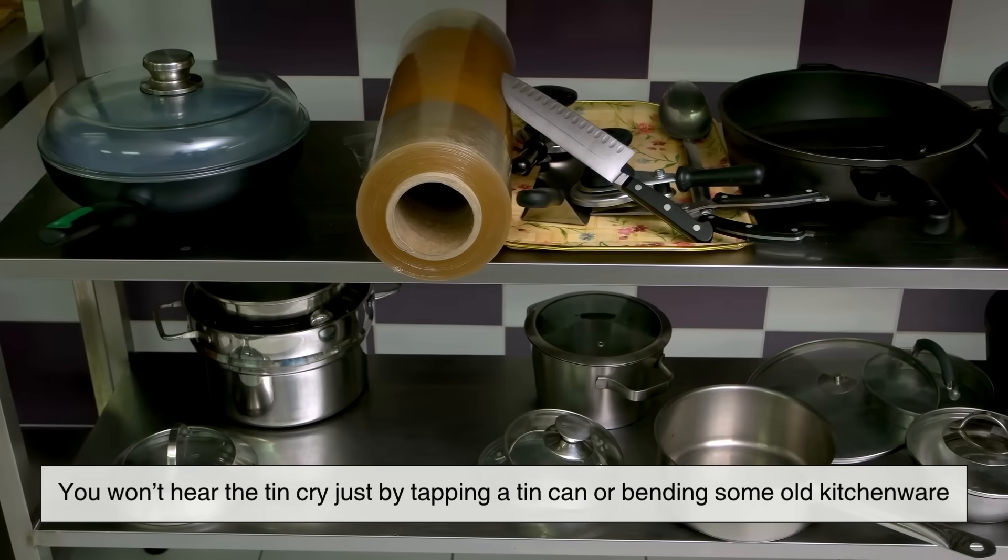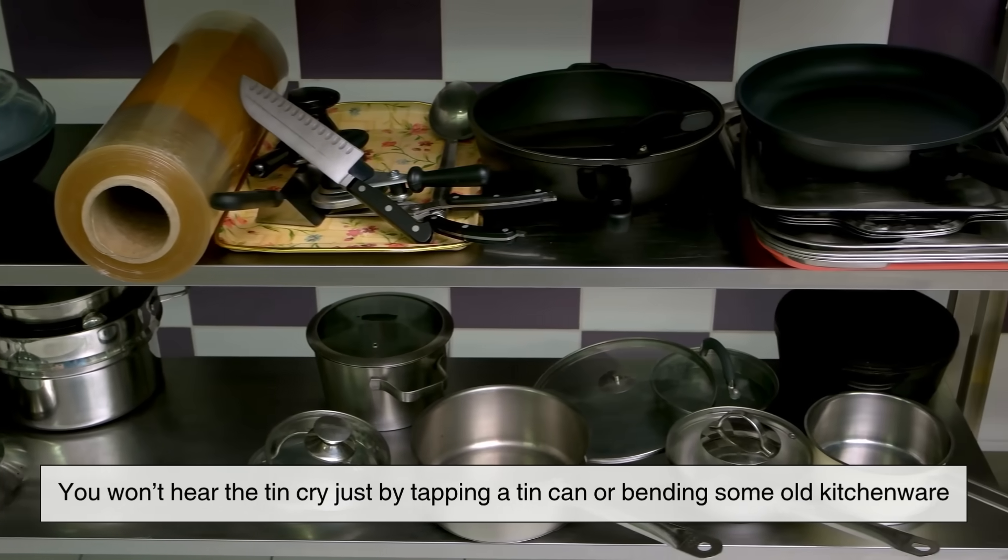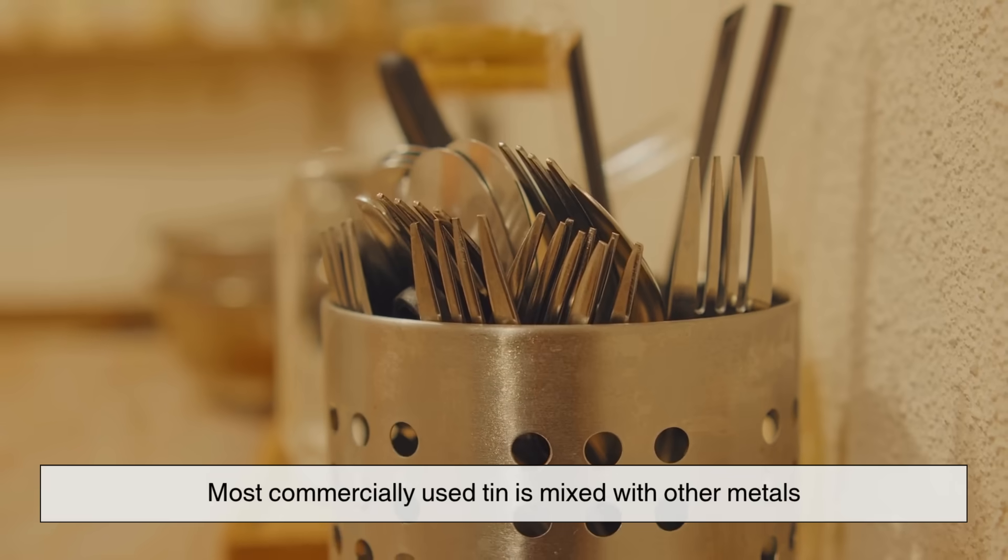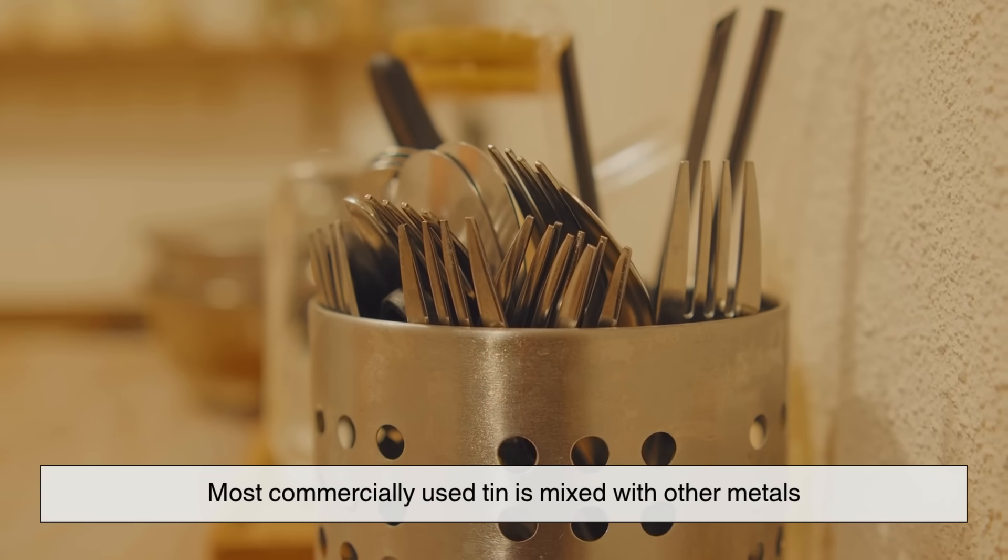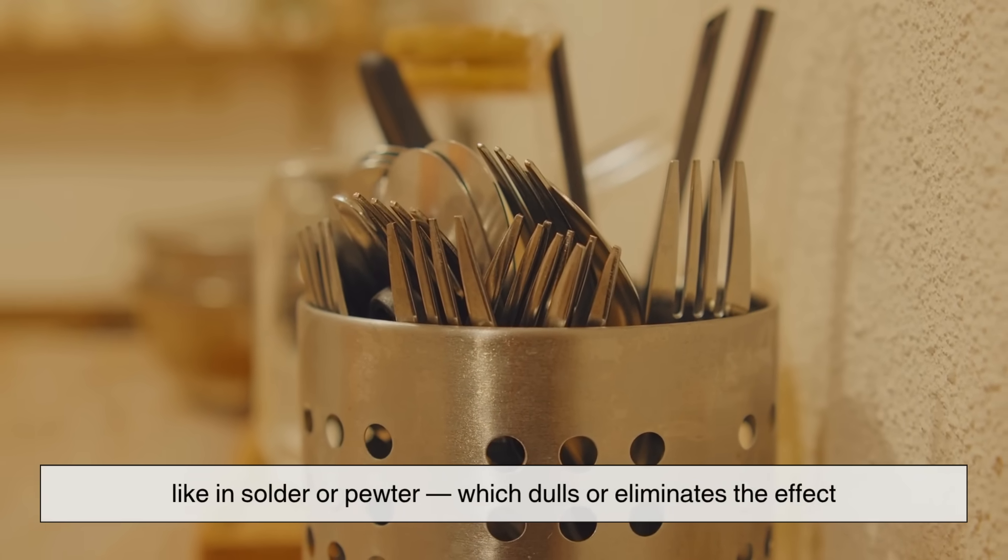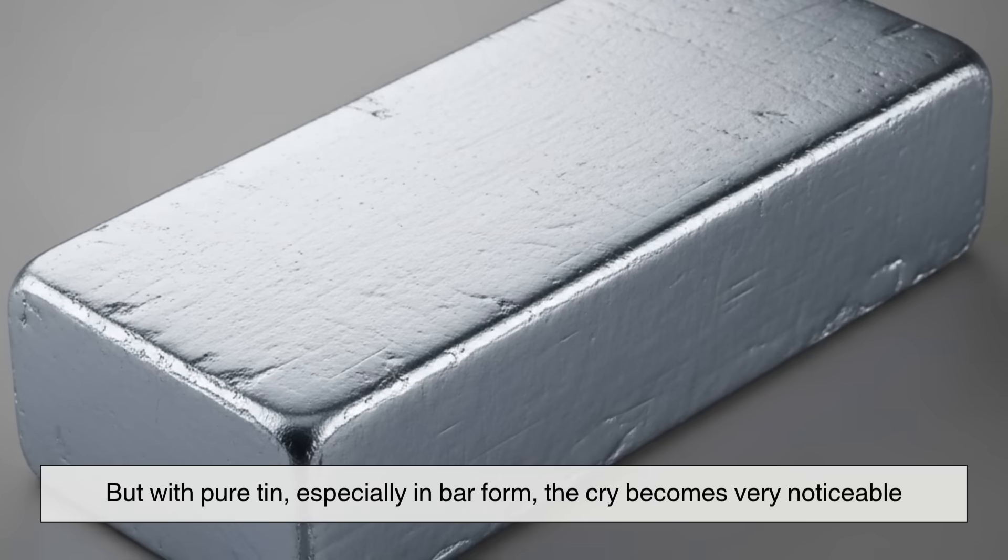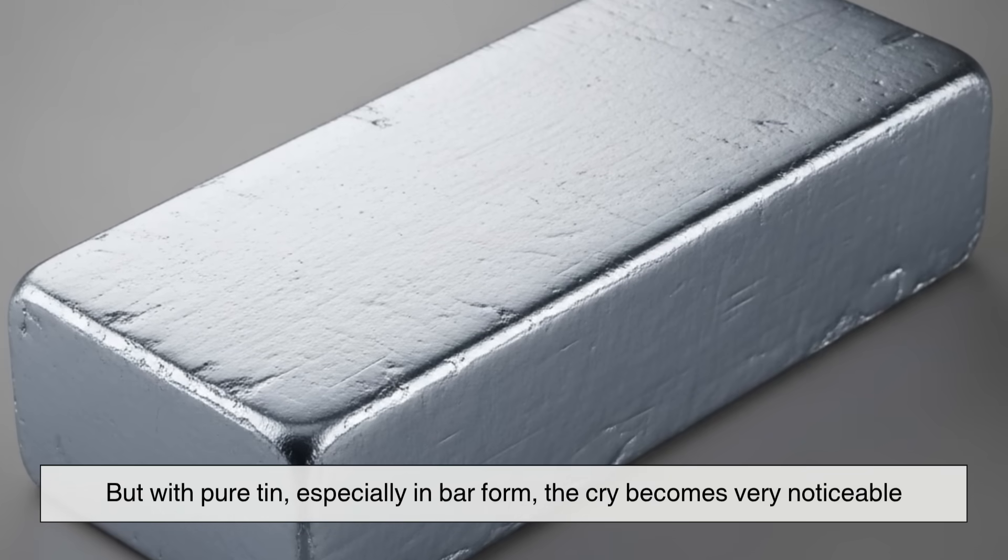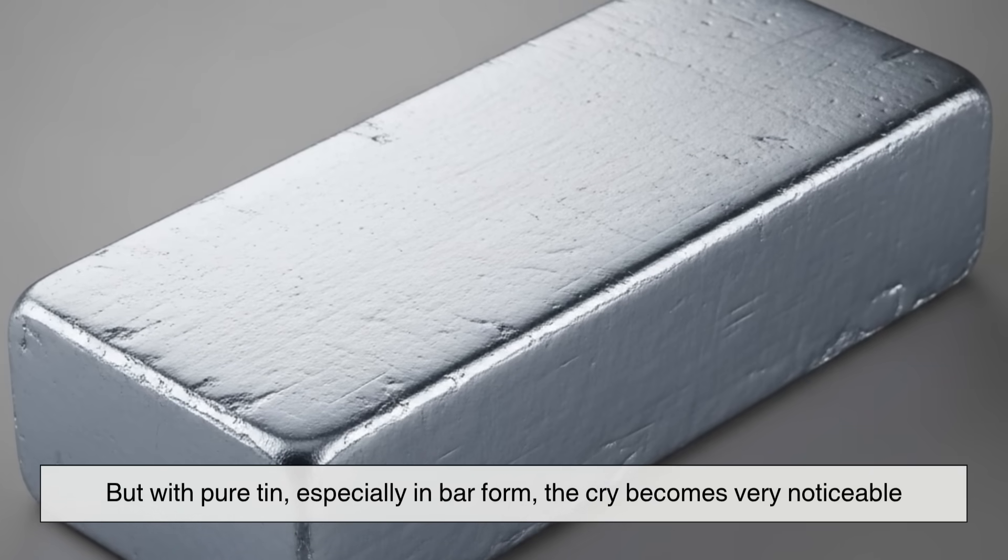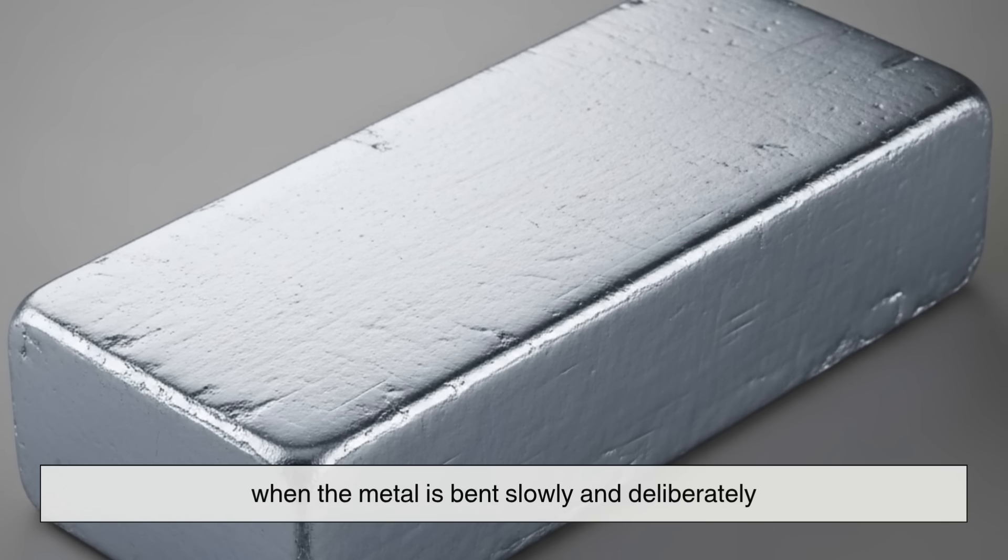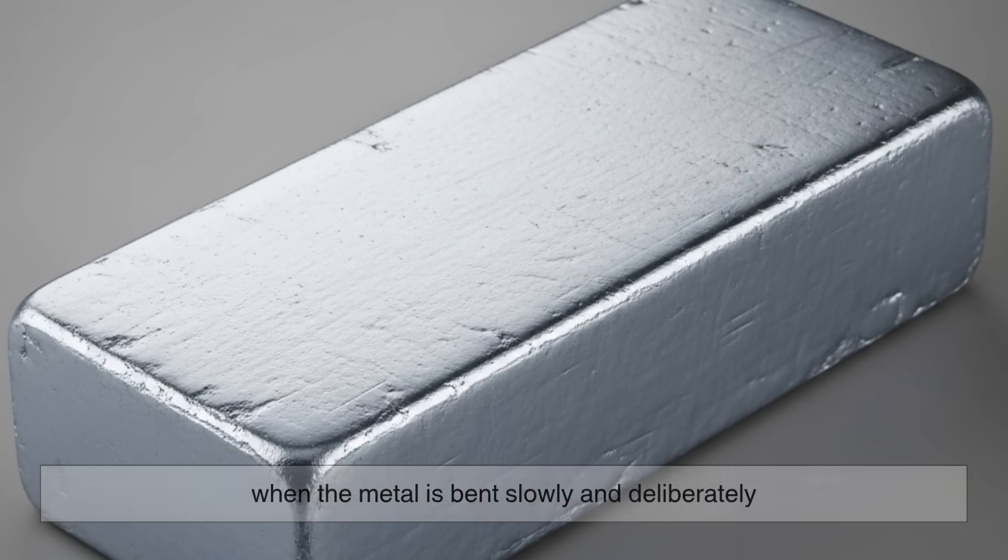You won't hear the tin cry just by tapping a tin can or bending some old kitchenware. Most commercially used tin is mixed with other metals, like in solder or pewter, which dulls or eliminates the effect. But with pure tin, especially in bar form, the cry becomes very noticeable when the metal is bent slowly and deliberately.